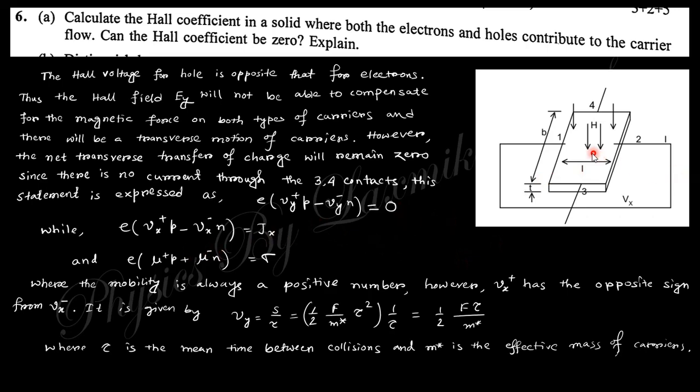The current is zero, but in the case of the x-axis, along this direction, current flow is jx. The conductivity is nothing but due to the hole: sigma equals e times mu plus p, where p is the density of holes, and n is the density of electrons. So this is the total conductivity.